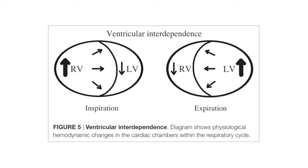Pulsus paradoxus and ventricular interdependence can also occur in severe COPD or asthma exacerbation — without a pericardial effusion. Acute pulmonary embolism with severely reduced RV function also exaggerates this phenomenon. Rarely, a large pleural effusion combined with a small pericardial effusion can produce the same physiology as a large pericardial effusion alone.